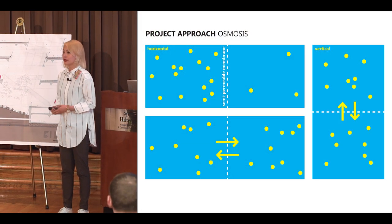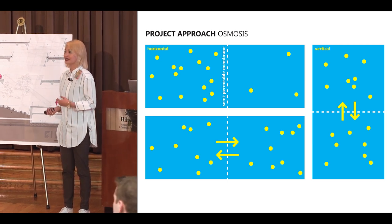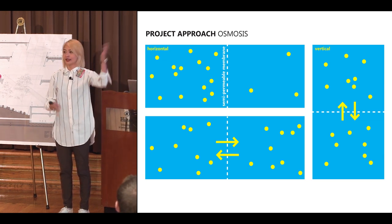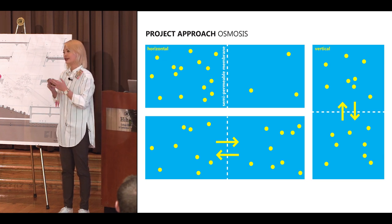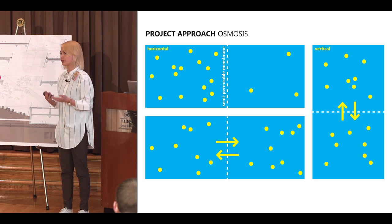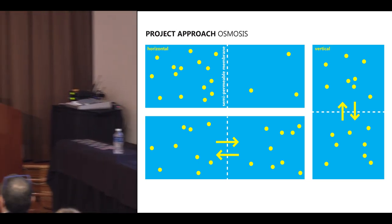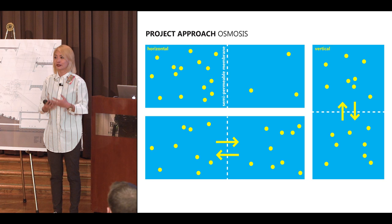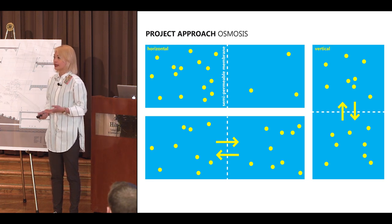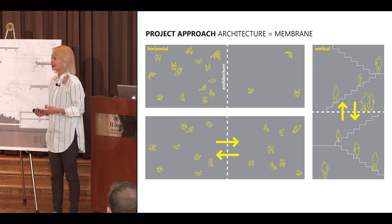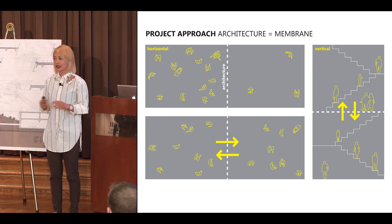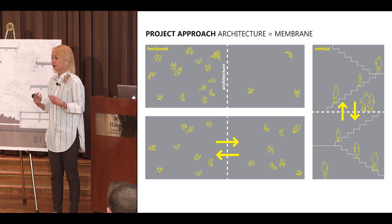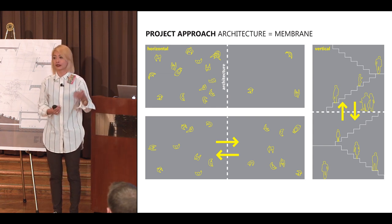For my project approach, I decided to look into the definition of osmosis, taking the very basic concept. So in a solution, there's a concentrated side and a non-concentrated side of molecules, and those molecules are able to flow freely through a semi-permeable membrane. Molecules can move horizontally and vertically without any assistance. When this is translated into architecture, we can consider that semi-permeable membrane as architecture, which influences and helps people move through spaces and also assists people to move vertically.